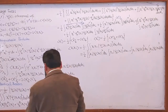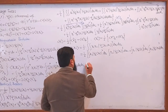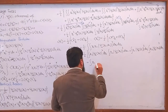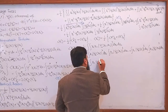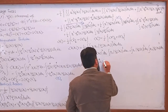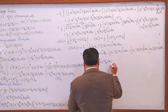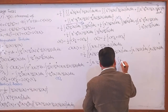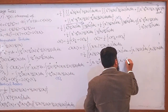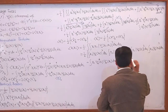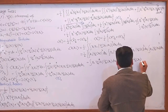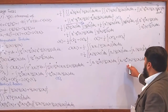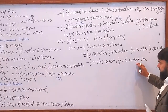Plus the cross terms: integral of x1 times ψ_a(x1) conjugate times ψ_b(x1) dx1, multiplied by integral of x2 times ψ_b(x2) times ψ_a(x2) dx2. These are the cross terms — ψ_a and ψ_b — first with x1 and then with x2.